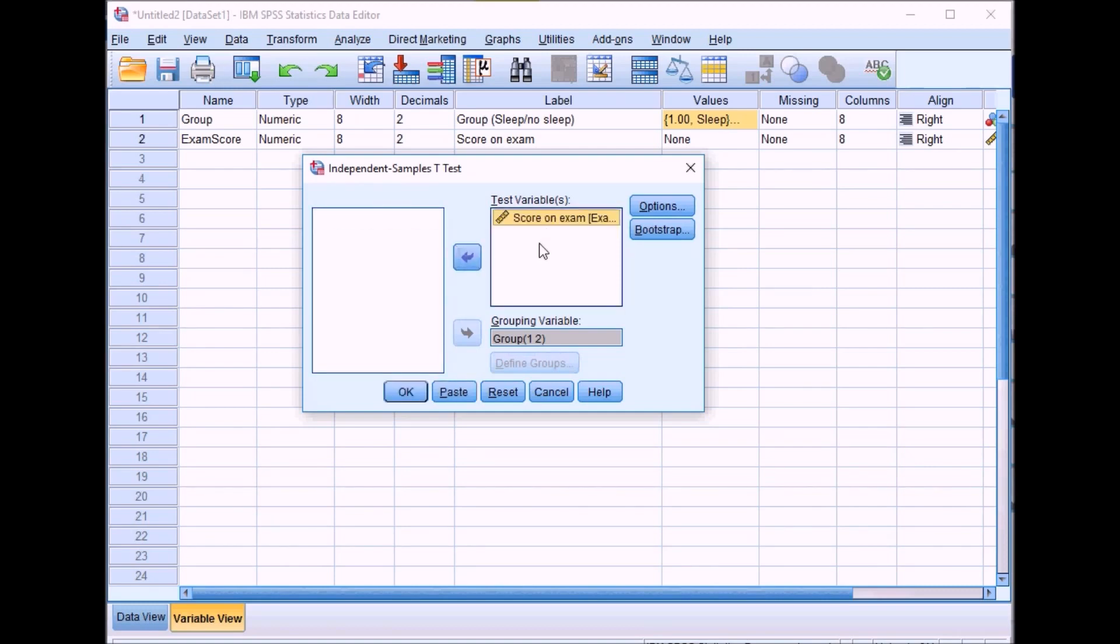You can actually add as many variables in this box as you like, and what it will do is conduct a separate t-test on each of the dependent variables, but the independent variable will remain the same. So it's not conducting a massive test on all of these variables, it's just conducting separate t-tests for each variable you add. We'll click on OK now and bring up the output.